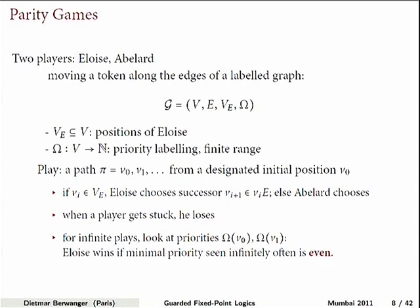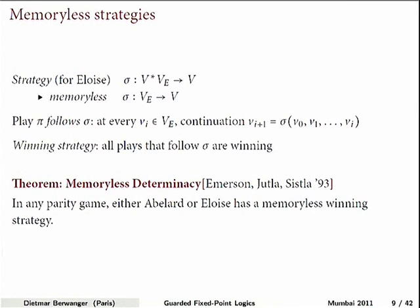It can happen that we have an infinite play. Then we look at the priorities we have met, and since the range is finite, there must be some priority that appears infinitely often — but we look at the lowest one, and that needs to be even. The point is we want to talk about things that happen over and over again in a nested way, with some degree of freedom.